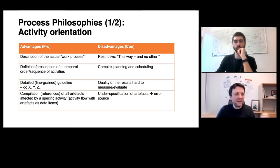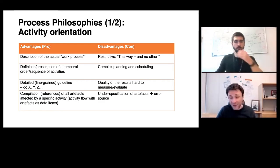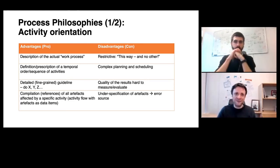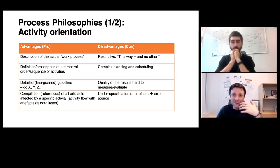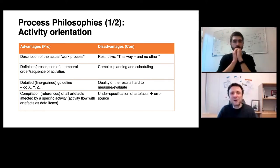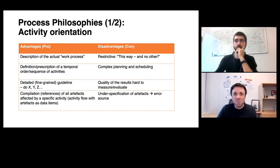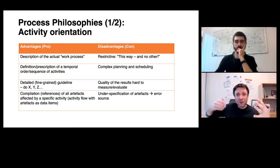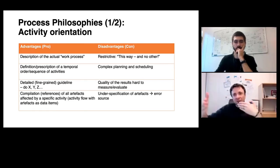At the same time, the major problem with activity-oriented software process models is that they don't scale to the needs of practice — they are either too vague or too rigid and detailed. Primarily for requirements engineering, they don't give real guidance on how to specify contents. If an activity says 'specify use case model,' I still don't know how to specify a use case model. Also, there's no notion of quality in the artifacts or view on progress control.